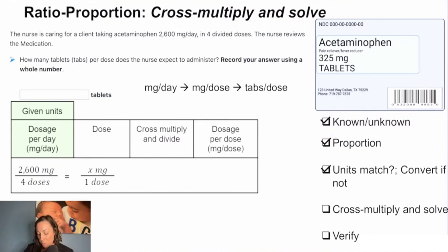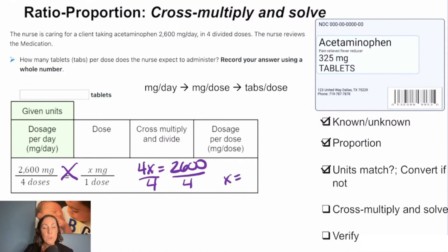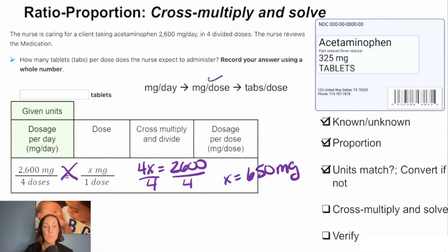When you cross multiply, you're going to get 4X equals 2,600. Of course we have to divide by four because we need to get X alone. So X equals — did we get 650 milligrams? And we see that that's going to tell us our milligrams per dose.